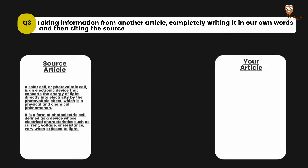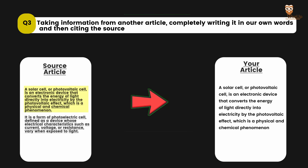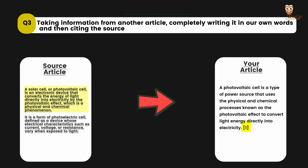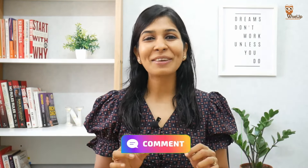Last one: taking information from another article, completely writing it in your own words, and then also citing the source. Is this plagiarism or not plagiarism? Yes — this is not plagiarism. In fact, this is the right way to include information in your text. So tell me, how much did you score? How many got three out of three, two, one, or zero? People who got zero are the biggest learners here — please tell me in the comments below.